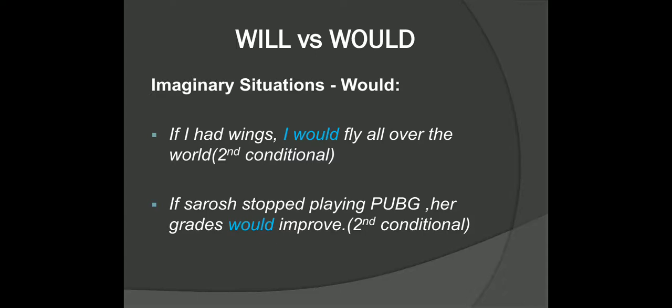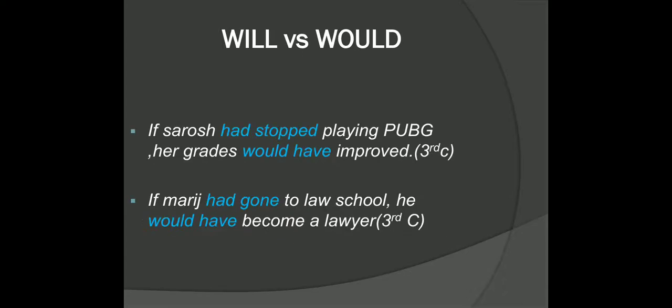There is one more — the third conditional, which is used to talk about past conditions. For example: 'If Sarosh had stopped playing PUBG, her grades would have improved.' Here we are talking about conditions in the past. Notice that we say 'had stopped' — this is the past perfect tense in the condition — and we use 'would have' in the result. We only use will when we talk about real, possible situations. For imaginary conditions, we always use would.